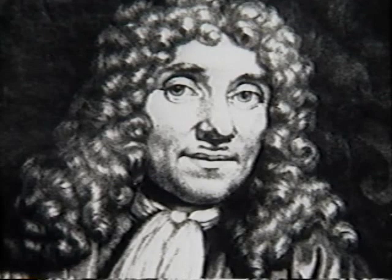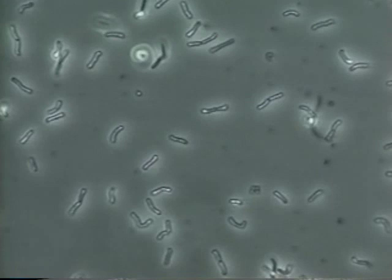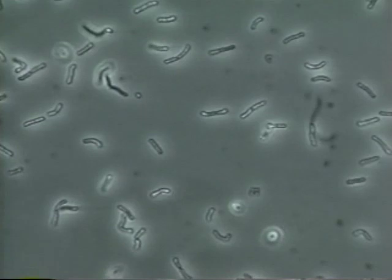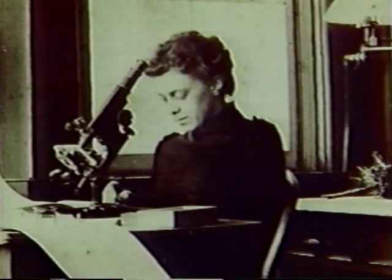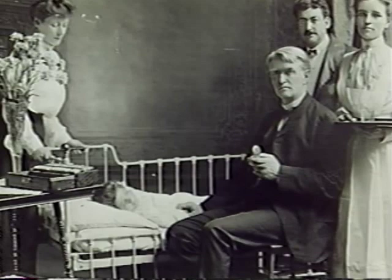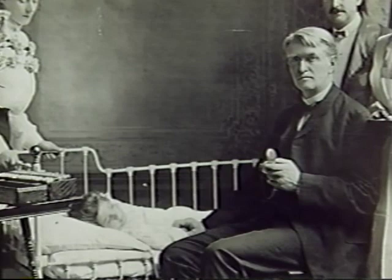In the late 1600s, a Dutch lens maker named Antony von Leeuwenhoek used a primitive microscope to examine the scrapings from a decayed tooth. He thus became the first person to see the world of microscopic bacteria, which are invisible to the unaided eye. Over the next two centuries, using more powerful microscopes, scientists were able to identify hundreds of different kinds of bacteria. And a little more than 100 years ago, they began to understand the role of bacteria in causing diseases like tuberculosis and pneumonia.